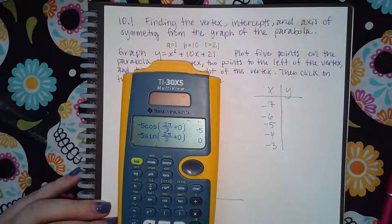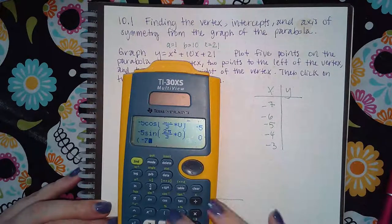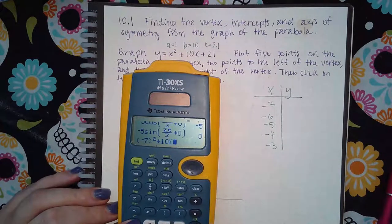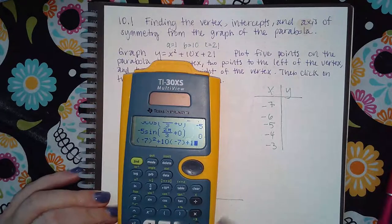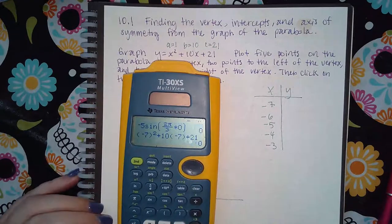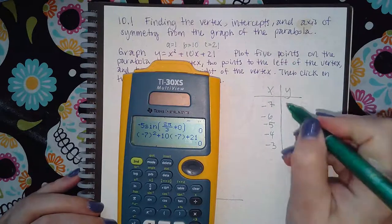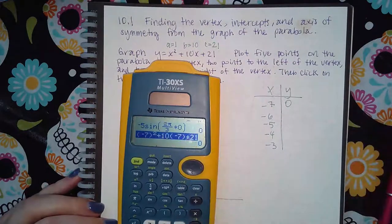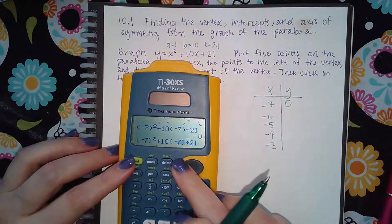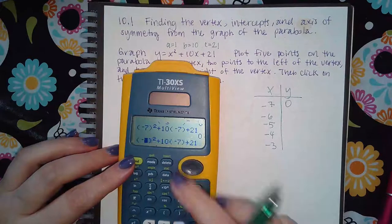I'm going to do negative 7 squared plus 10 times negative 7 plus 21, and I get zero. Then I'm going to go back up there and change that to a negative 6.